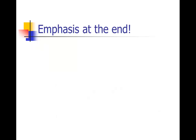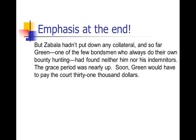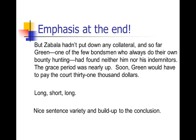And one more thing I want to point out about this paragraph: it has a really nice ending. It ends — 'But Zabala hadn't put down any collateral, and so far Green — one of the few bondsmen who always do their own bounty hunting — had found neither him nor his indemnitors.' Notice the use of dashes in that sentence — it's kind of a long, complex sentence. And then we get a short sentence: 'The grace period was nearly up.' Then: 'Soon, Green would have to pay the court $31,000.' So we get this long complex sentence, short sentence, and then a little bit longer sentence. Notice the variety in sentence structure — that provides a really nice buildup for the conclusion, and it ends with this memorable conclusion that this person Green is going to owe the court a lot of money.